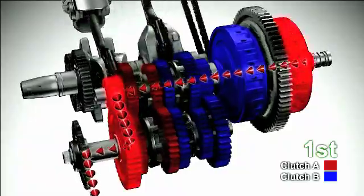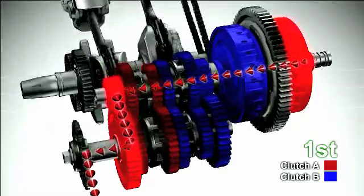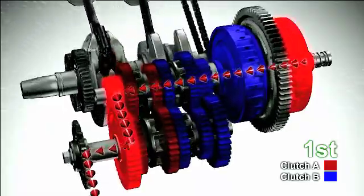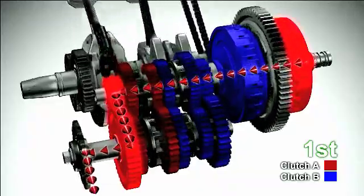The vehicle is now driving in first gear. Clutch A for odd numbered gears is engaged and transmits the driving force. Clutch B for even numbered gears is disengaged to keep the gears in neutral.